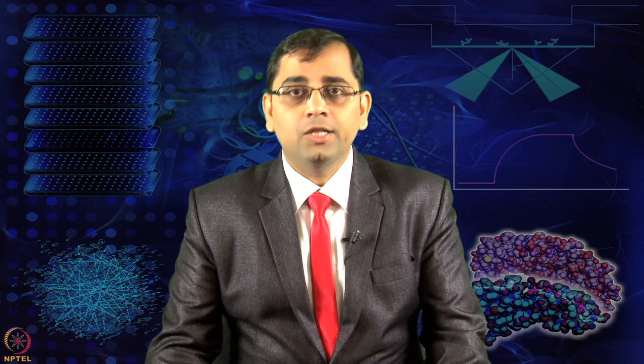The central dogma — the basic biomolecular workflow — starts from genes to transcripts and then proteins. The entire field which aims to study all the genes of a given organism is known as genomics, and the full set of genes is the genome. Likewise, all transcripts are studied in transcriptomics, and all proteins are studied in the field of proteomics.